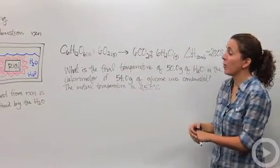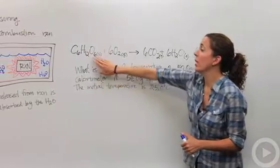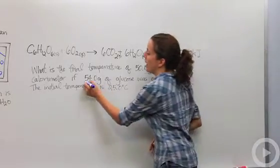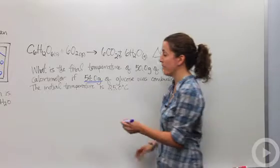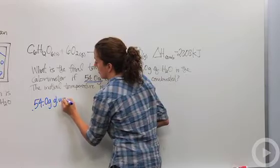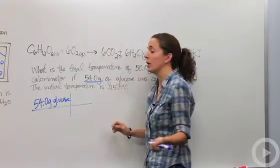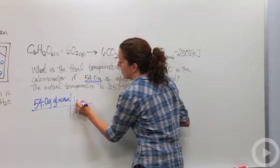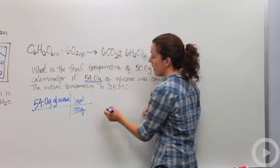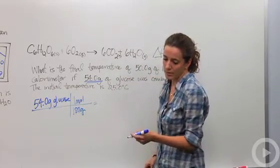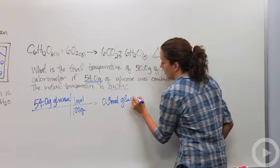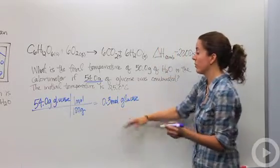Well, the first thing I want to know is, I know for one mole of glucose it releases 2,808 kilojoules of heat. But I don't have one mole, I have 54 grams. Well, how many moles is that? Let's figure that out. So I'm going to say 54 grams of glucose, I'm going to convert that to moles by looking at the molar mass, and I know that's 180. So for every one mole, it's 180 grams. And so I know that I have 0.3 moles of glucose.